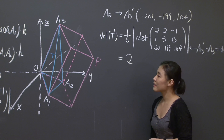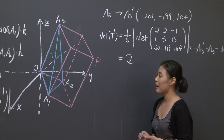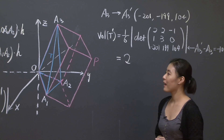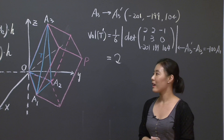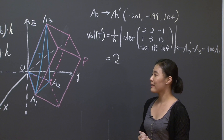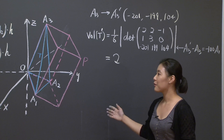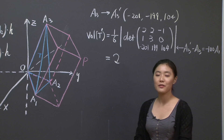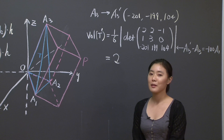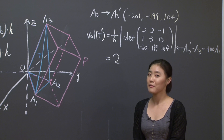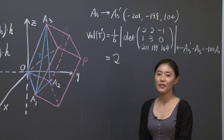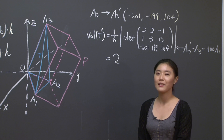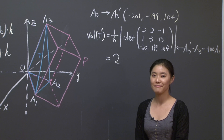This completes the problem. I hope this example is helpful to you. We should keep in mind that the fact that the determinant is related to volume can become very handy in computing the volume of certain geometric objects. Thank you for watching, and I look forward to seeing you soon.